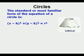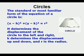The standard or most familiar form of the equation of a circle is quantity x minus h squared plus quantity y minus k squared equals r squared. h determines the displacement of the circle to the left and right, k determines the displacement up and down, and r is the radius.